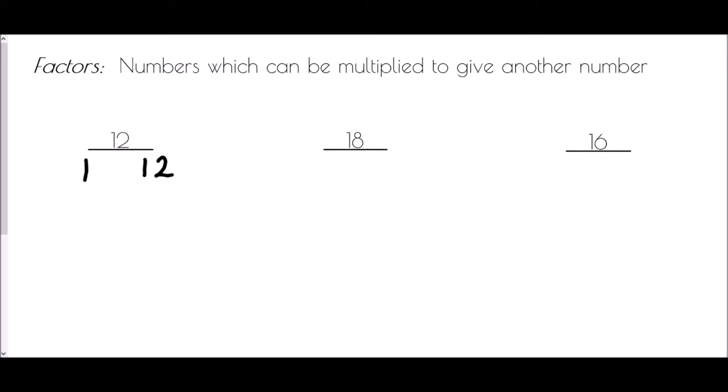So 1 and 12 are both factors. Working through systematically, we try the next value: can we multiply 2 by something to make 12? Well, 2 times 6 is 12, so 2 and 6 are both factors. Then try 3: 3 times 4 is 12. Next we'd try 4, but 4 is already in our list — that's the sign we've reached the end. We'll try the same approach for 18.